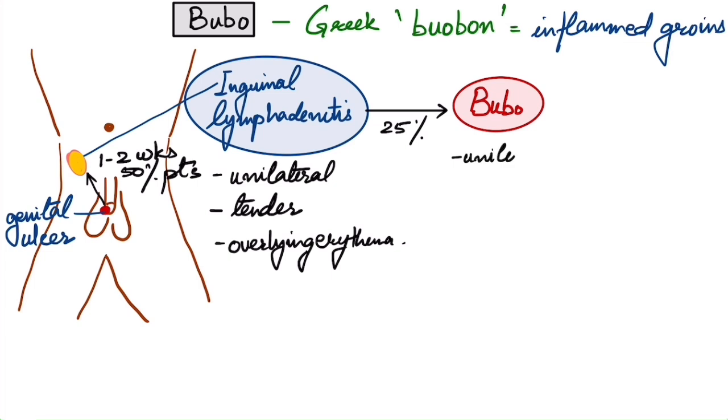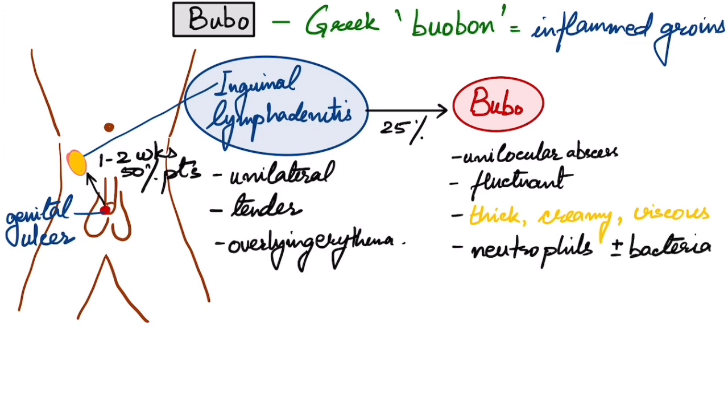The inguinal lymphadenitis is also called bubo. They mainly contain neutrophils. Bacteria might or might not be present or even cultured or Gram-stained from these. It might ulcerate and the ulcer will be chancroidal with the characteristic features of the chancroid ulcer and form even sinuses.